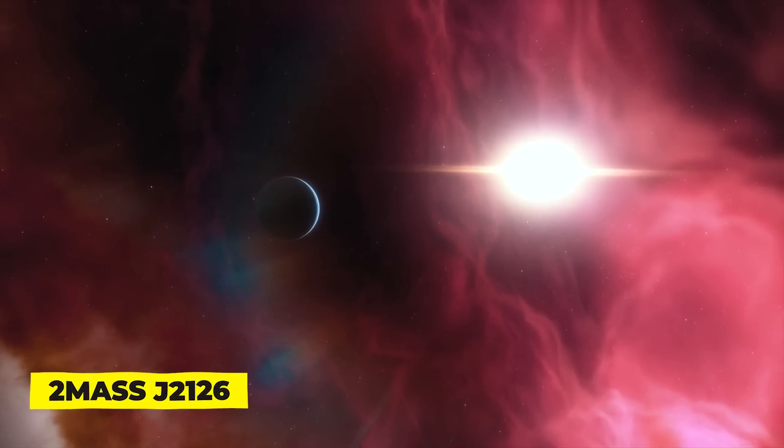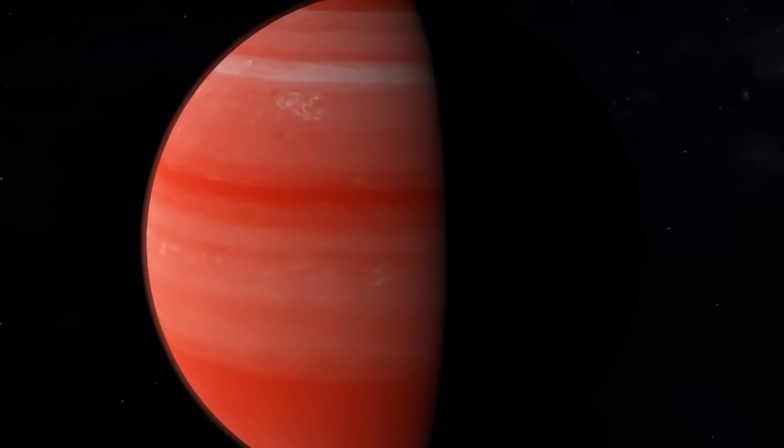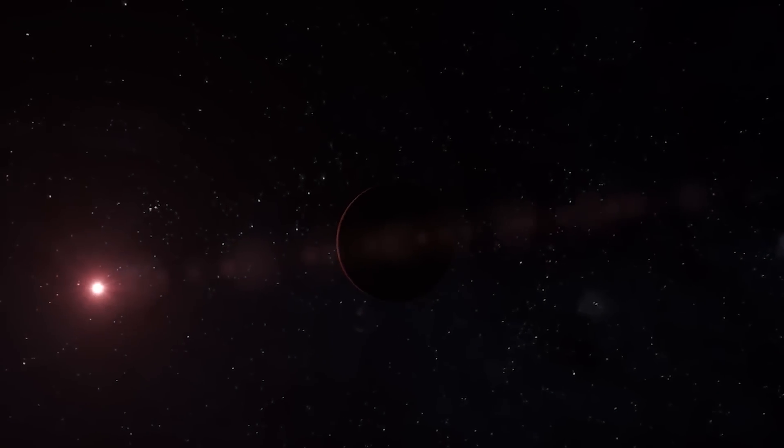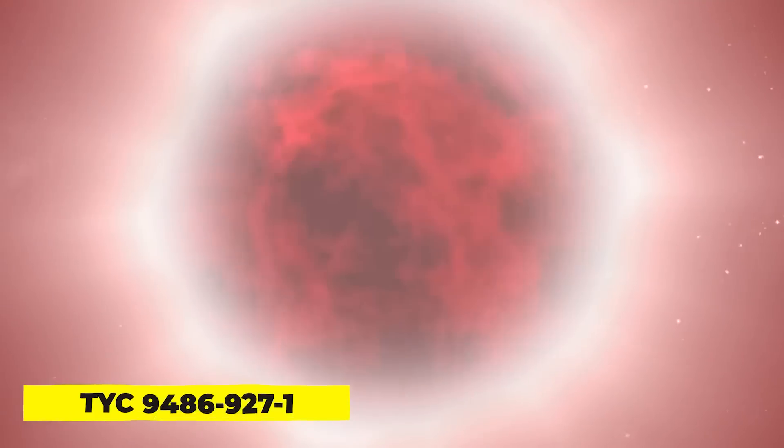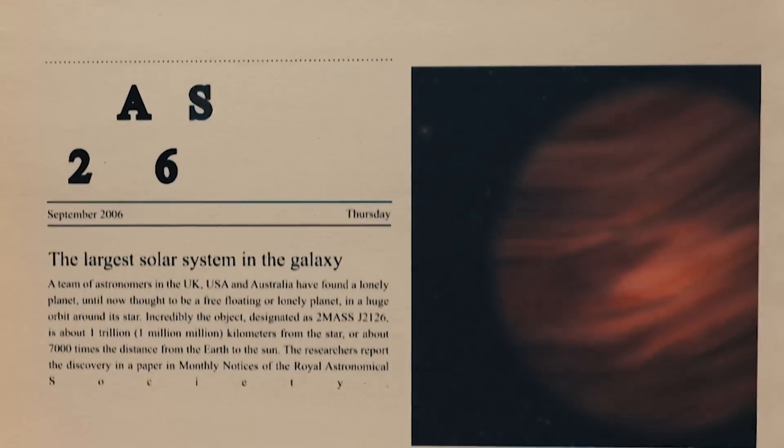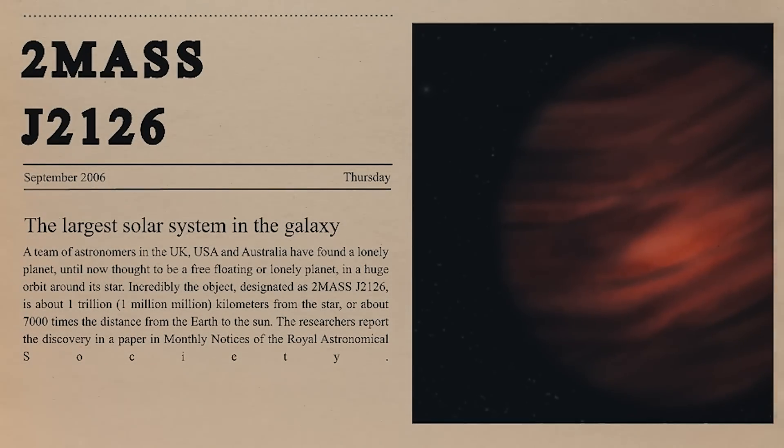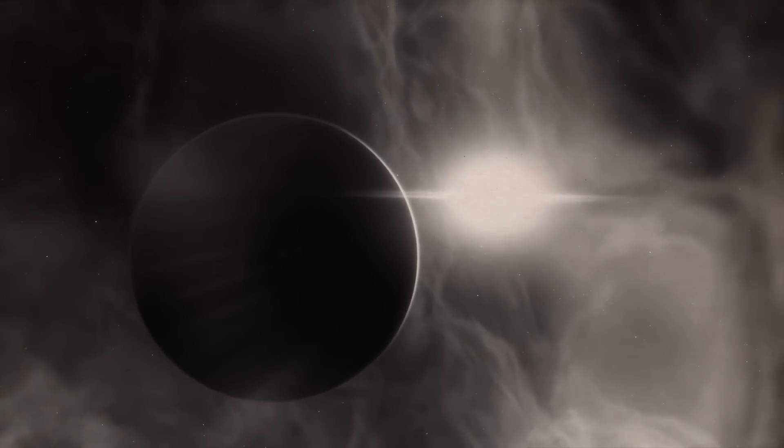2MASS J2126. Unimaginable is the size of the universe, and 2MASS J2126 is an exemplary example of that. It was once believed that this odd planet was a free-floating or lone planet. But this planet isn't all by itself. As it turns out, the stars TYC 9486-927-1 and 2MASS J2126 travel through space together. Strangely, astronomers have known about both objects for a long time, without ever making the connection between them. The exoplanet and the star are associated because they are both located approximately 104 light-years from the Sun.